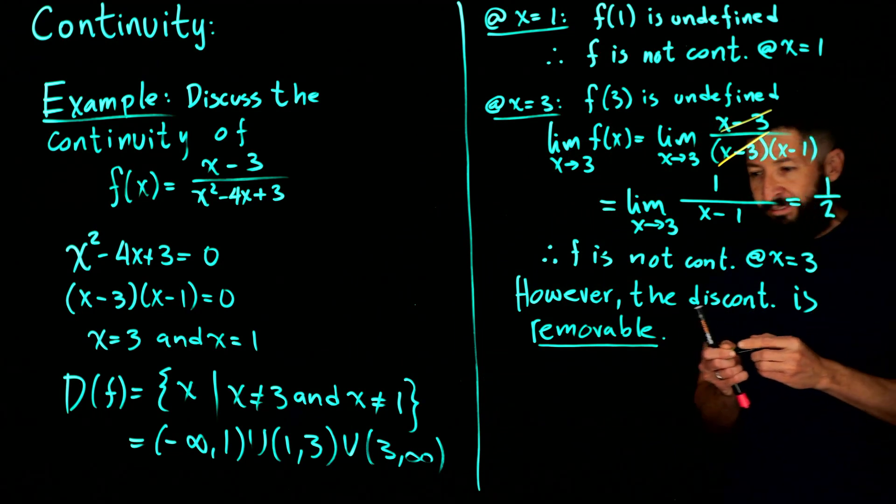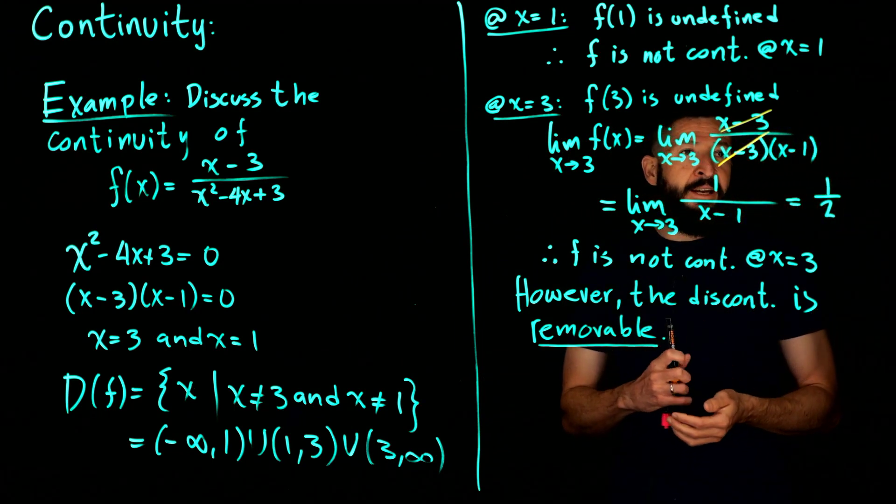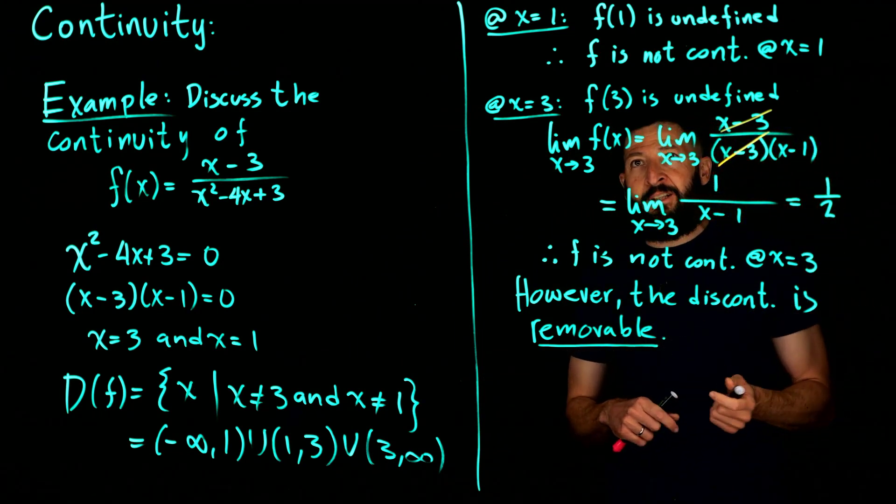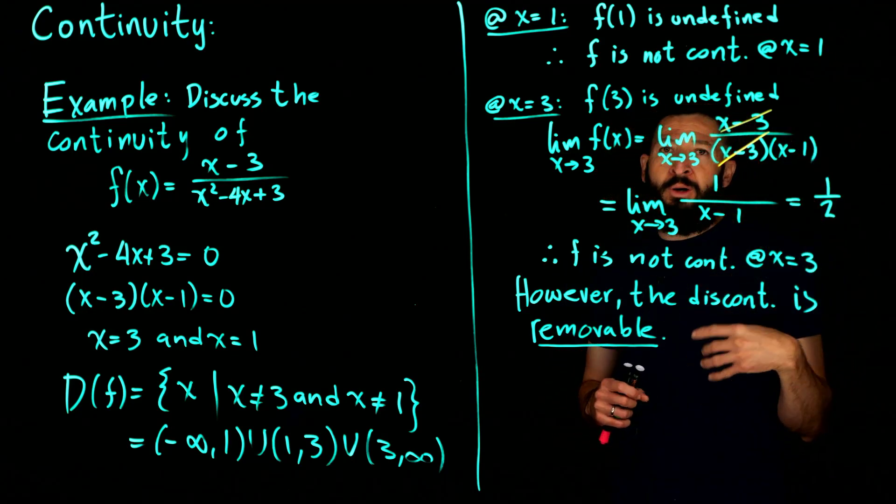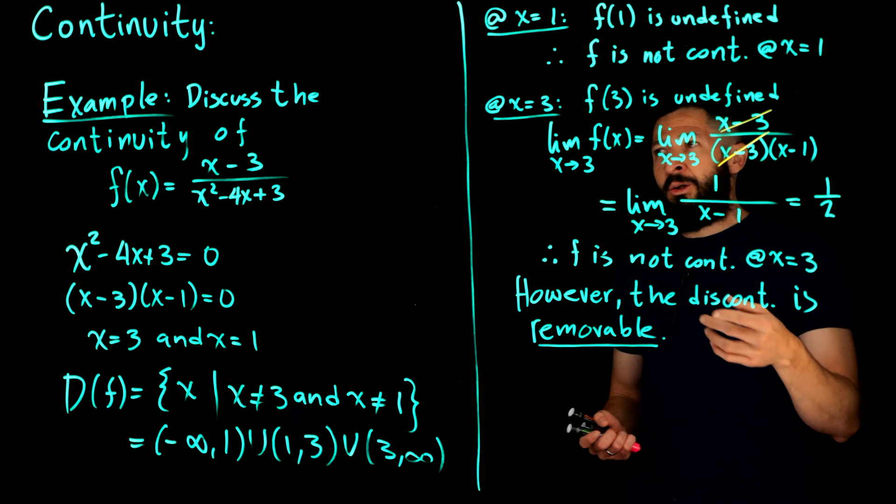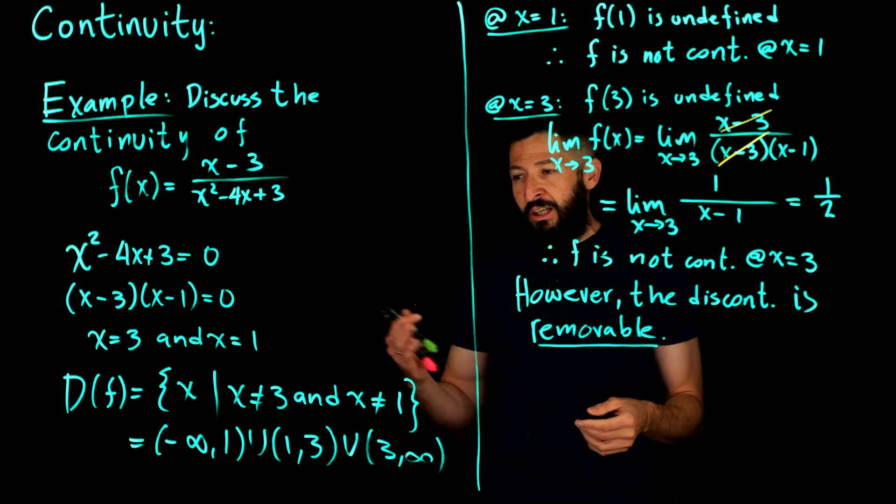So whenever the limit is defined, whenever the limit exists, it's a number, it's not infinity, then you have that that discontinuity is removable. In this particular case above, if you were to compute your limit, you would find that that limit is going to go to, well, it's going to be undefined.